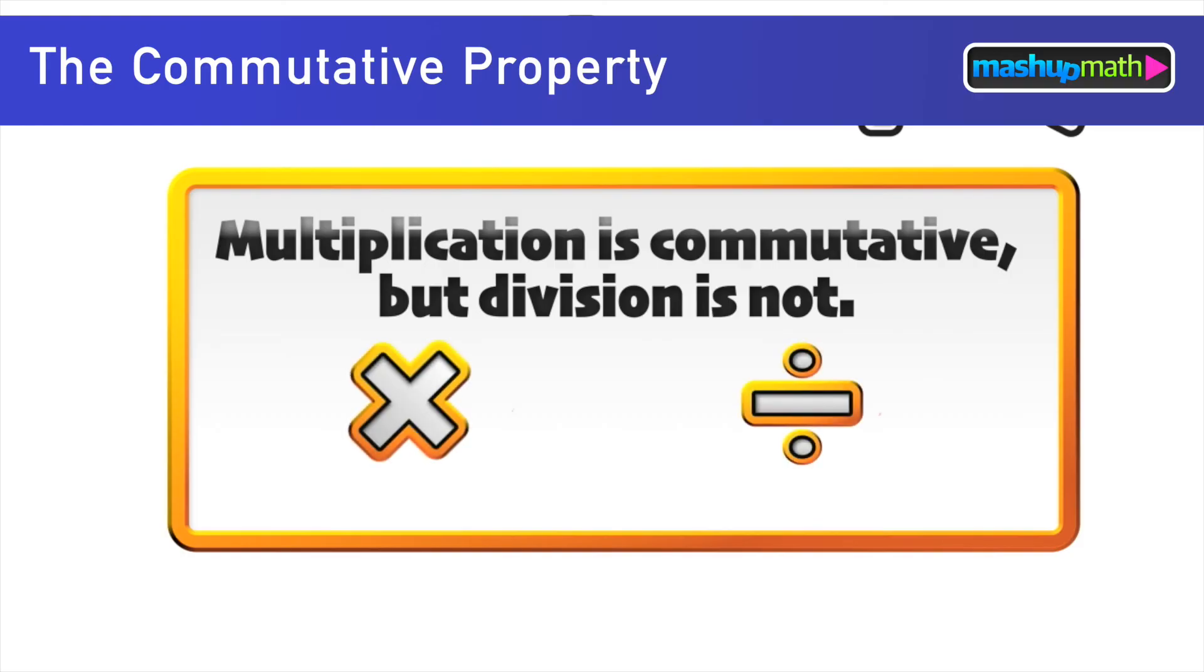We now know and understand why multiplication is commutative but division is not.